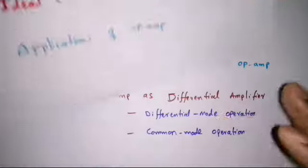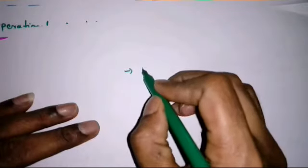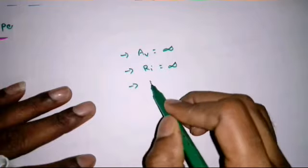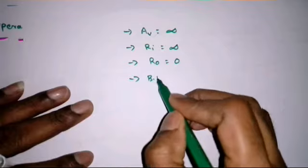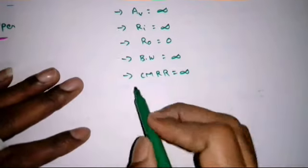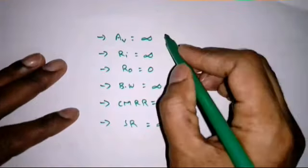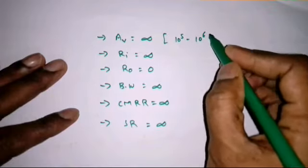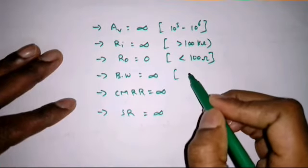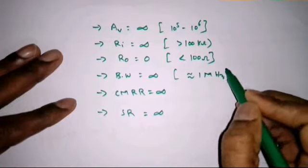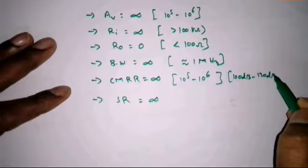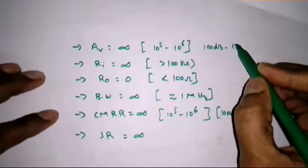We also covered the ideal characteristics of the op-amp. Voltage gain is infinity, input resistance is infinity, output impedance is zero, bandwidth is infinity, CMRR is infinity, and slew rate is infinity. Practically, the voltage gain is 10⁵ to 10⁶, input impedance is greater than 100 kΩ, output impedance less than 100 Ω, bandwidth approximately 1 MHz, and CMRR is 100 dB to 120 dB.